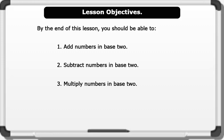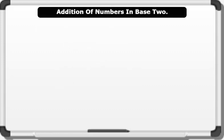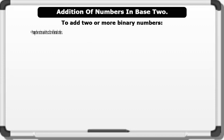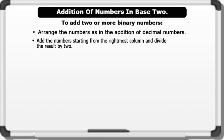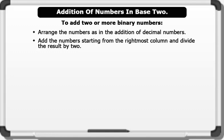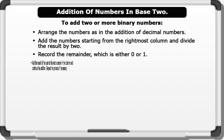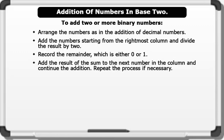Addition of numbers in base 2: to add two or more binary numbers, we arrange the numbers as in the addition of decimal numbers. We add the numbers starting from the rightmost column and divide the result by 2. We then record the remainder, which is either 0 or 1, then add the carry to the next column and continue. Repeat the process if necessary.